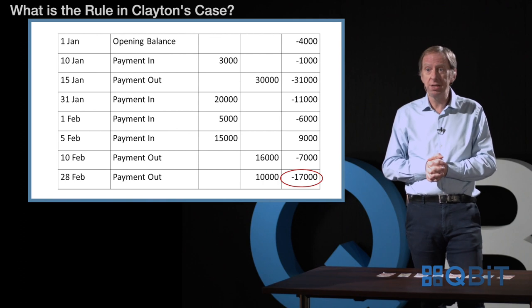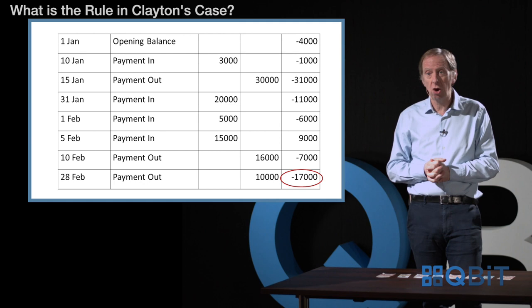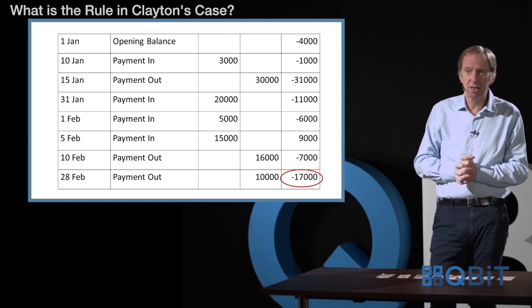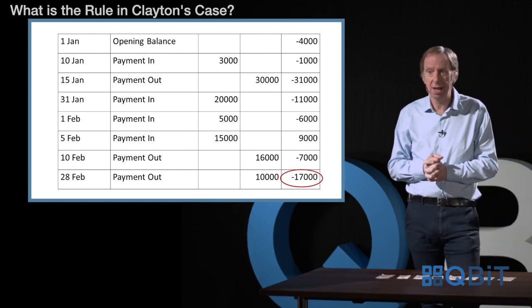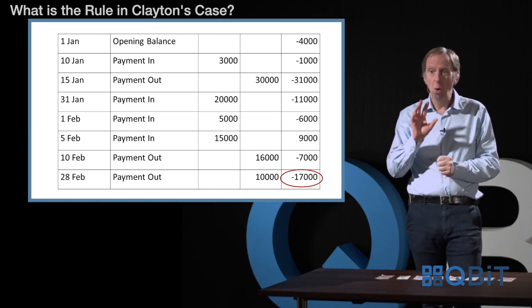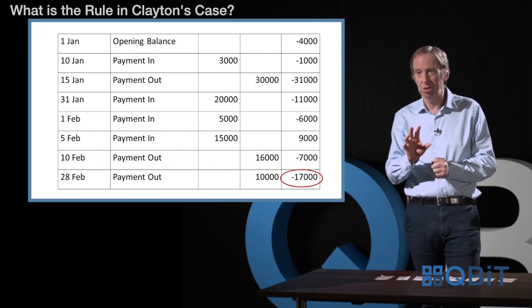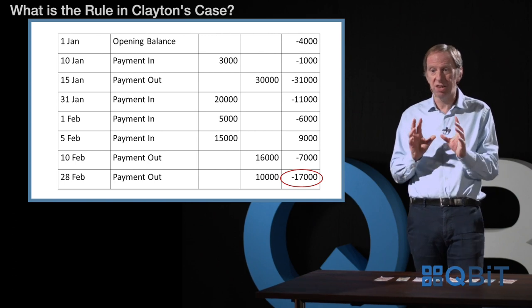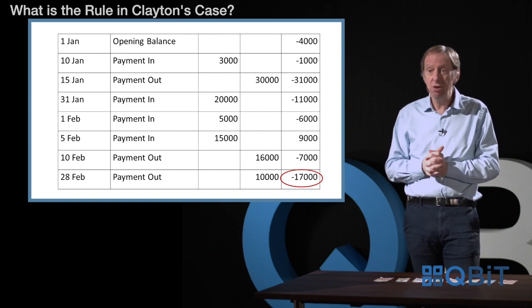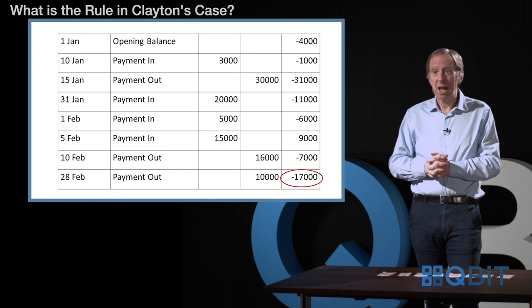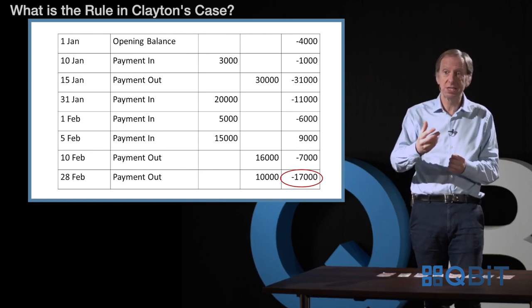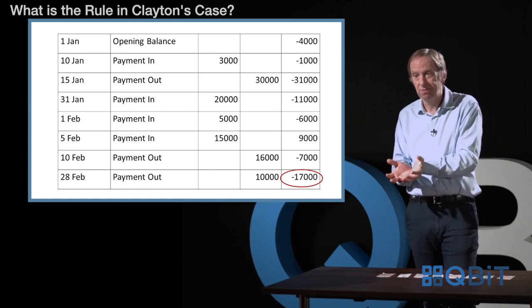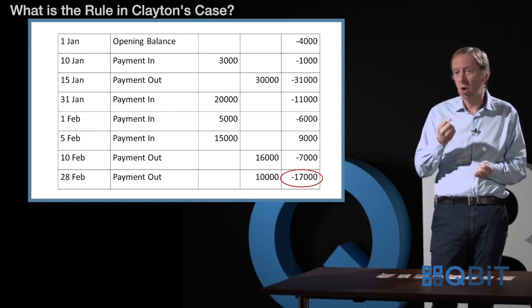Let's have a look at what that means in an imaginary account. Here we have an opening balance of minus £4,000, so the account is overdrawn, with payments in and payments out down to the 28th of February, where the balance is minus £17,000. Let's say we have to know which debit entries to that account make up the minus £17,000. You don't start from the top, even though the rule is first in, first out — the easiest way is to look at the minus £17,000 and count back the debit entries until you get to £17,000. The last payment out was £10,000 — obviously that's part of the £17,000 — and the next payment out going up was £16,000, which takes us to £26,000, greater than £17,000. So the minus £17,000 consists of the £10,000 plus £7,000 of the payment out on the 10th of February.